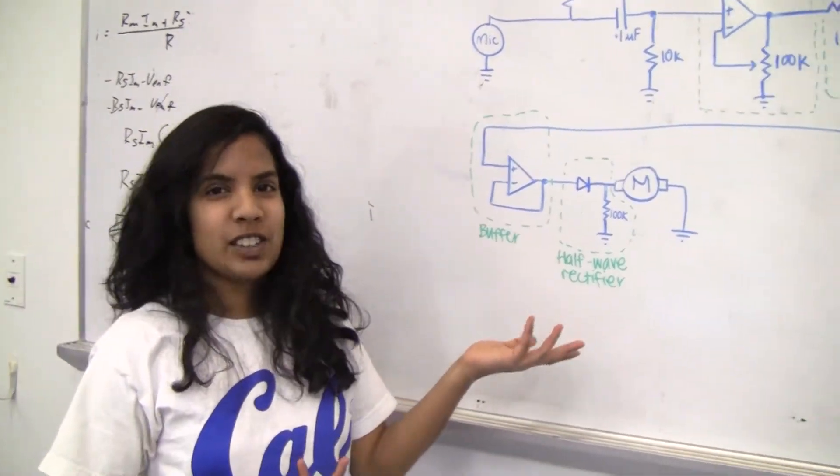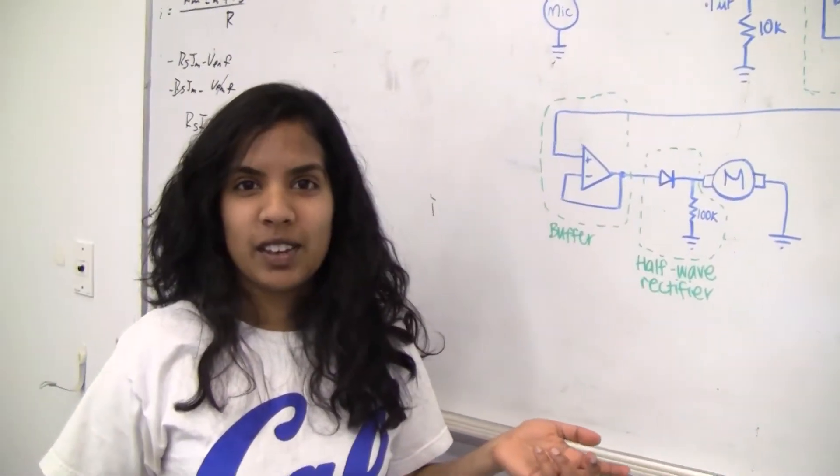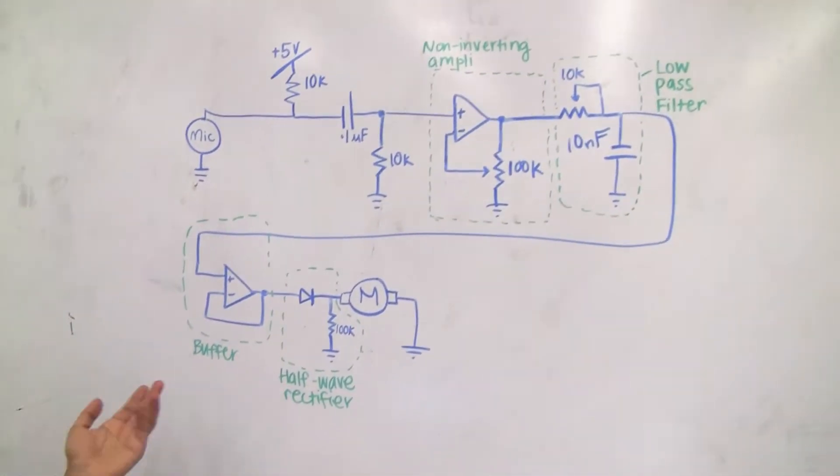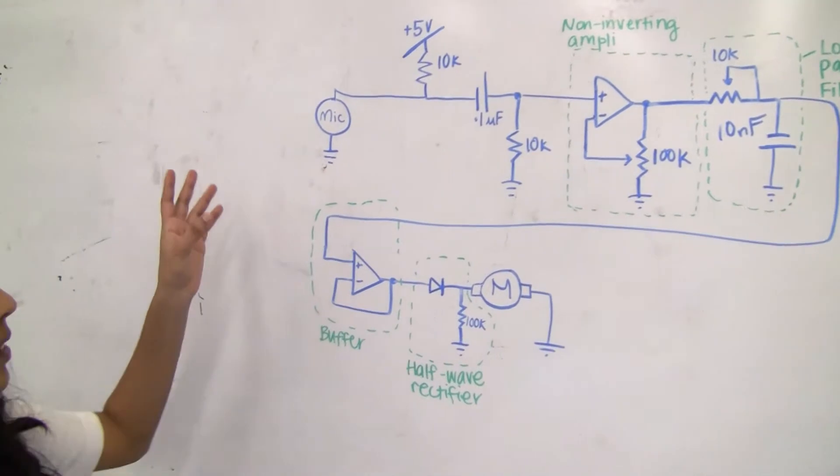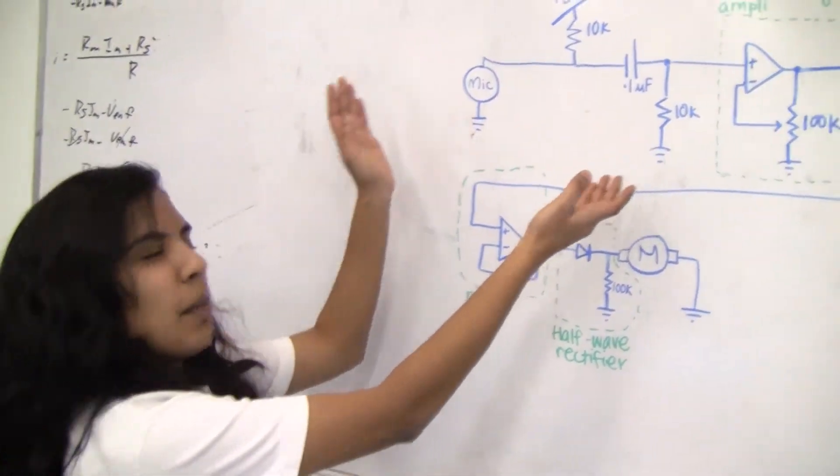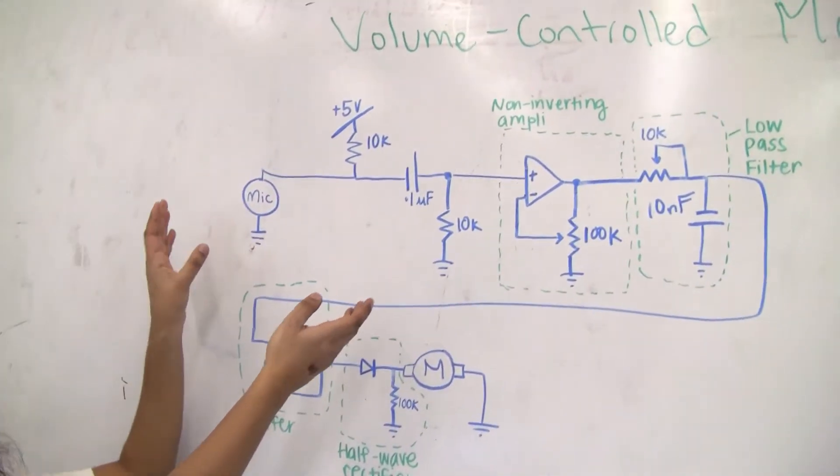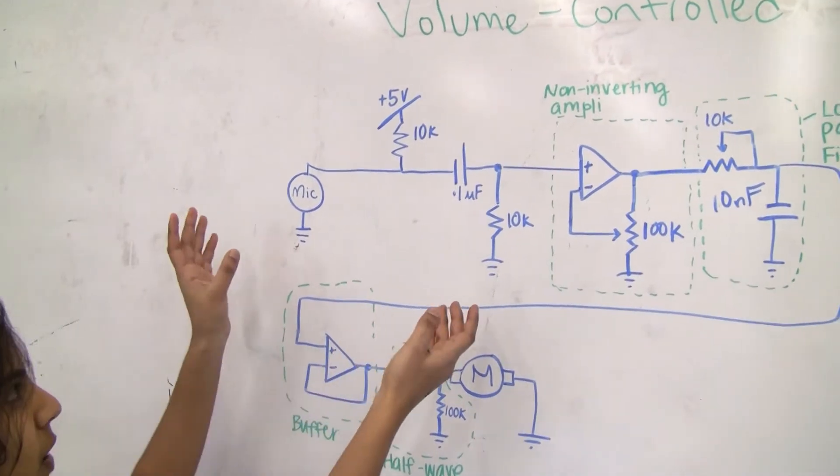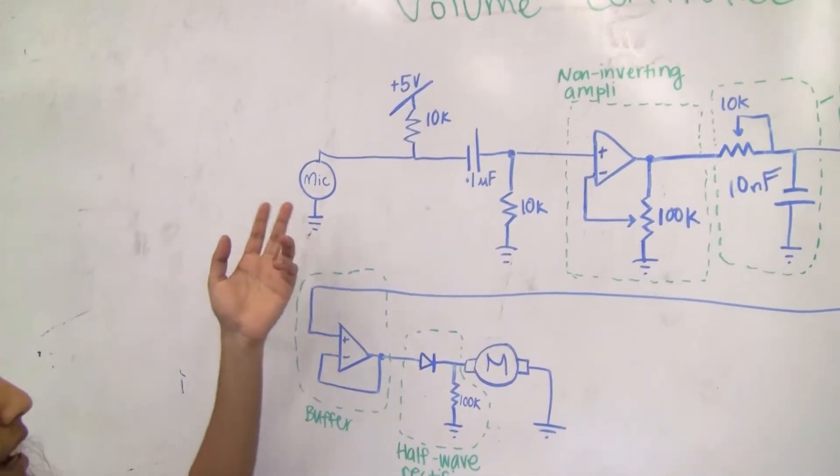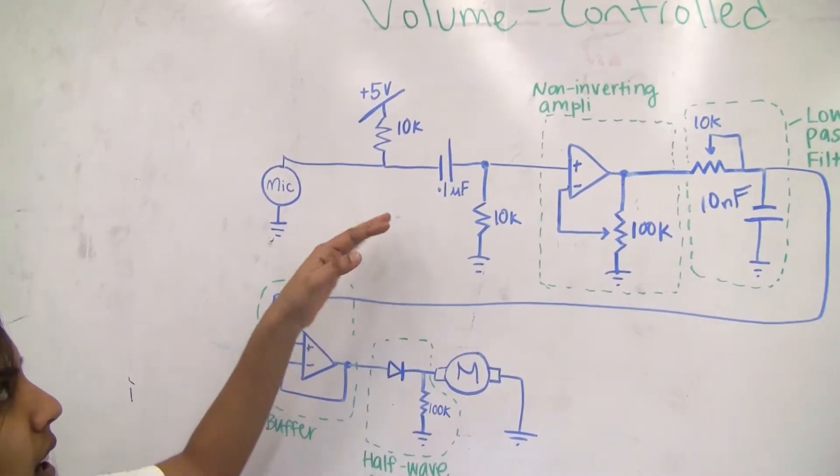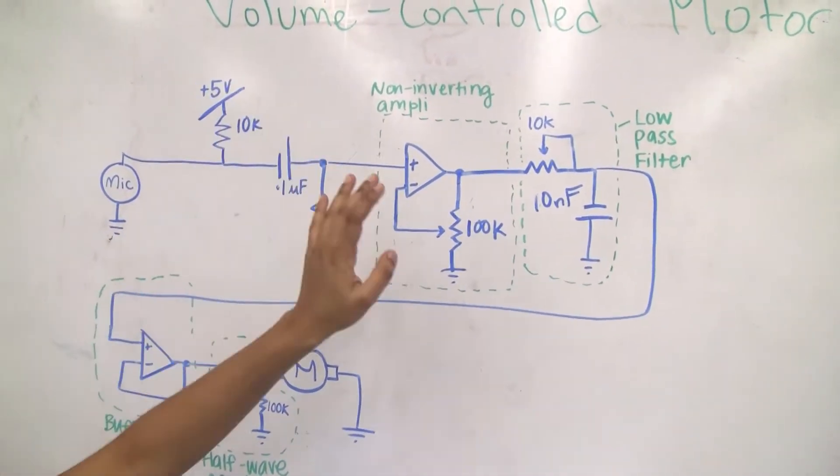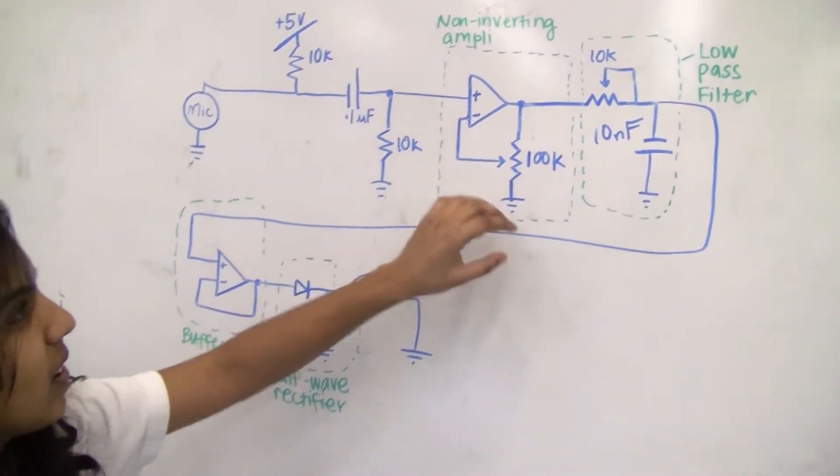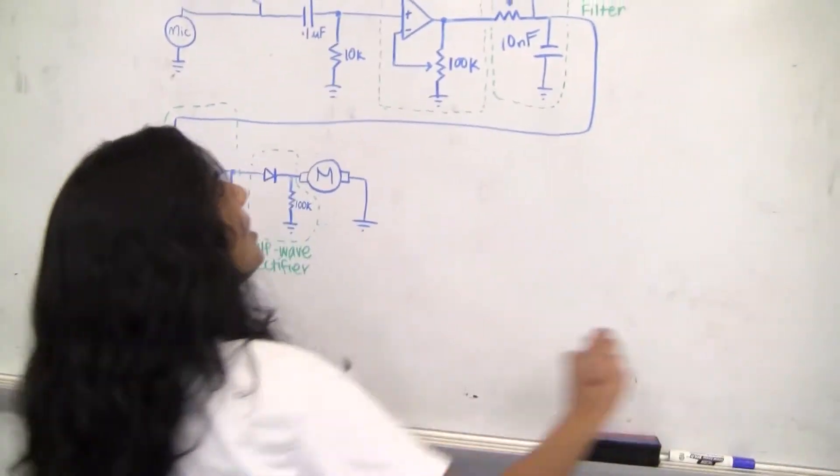This is a picture of our circuit diagram that we used to make our volume controlled motor. We started out with this microphone circuit, which got a signal coming out of our microphone. We connected our microphone to a resistor, capacitor, and another resistor powered by five volts.